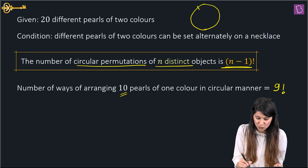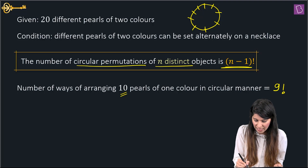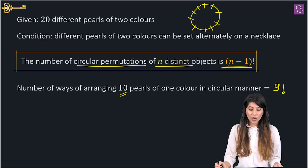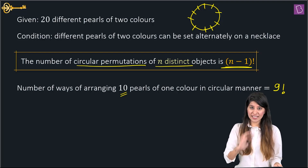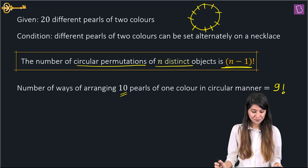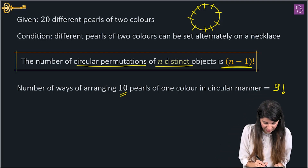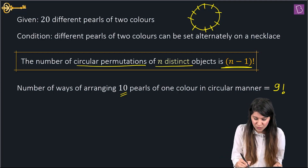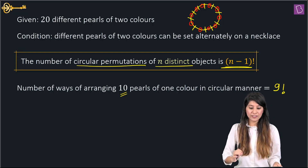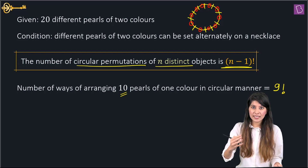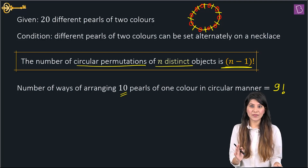So 10 pearls are arranged in a circle — positions 1 through 10. The idea is to arrange the remaining 10 pearls in the gaps. In a circular arrangement of 10 objects, the number of gaps is exactly 10 — unlike a linear arrangement where the gaps are one more than the number of objects. So we have 10 gaps and 10 remaining pearls.